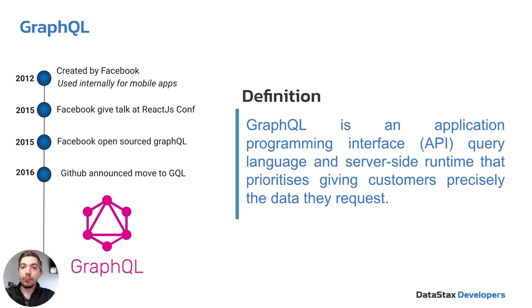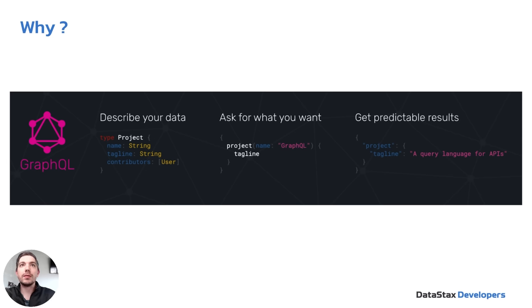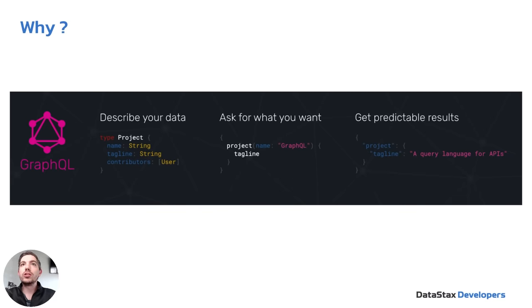GraphQL actually requires a schema to be in place, and you can describe your data by creating types. For example, we have a type called 'project' defined as having a name, tagline, and contributors. The data type for contributors is another defined type called 'user', with its own subset of data types. We can nest these types to have a hierarchy of all the data we have. You can then ask for exactly what you want — in this query we're asking specifically for a tagline where the project type has the name 'GraphQL', and on return we only get back the tagline, not the name or contributors.